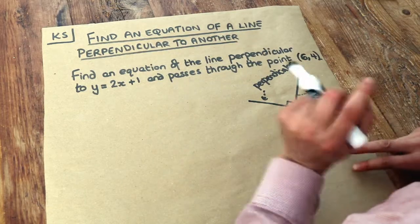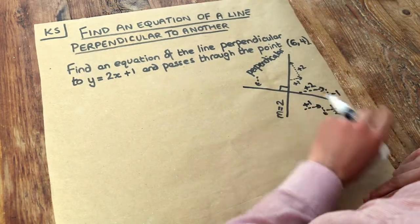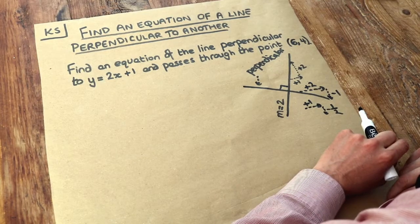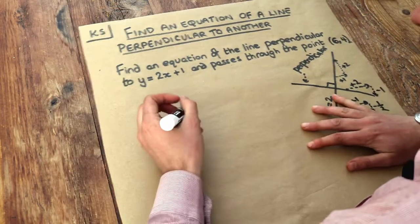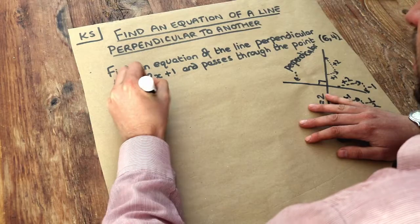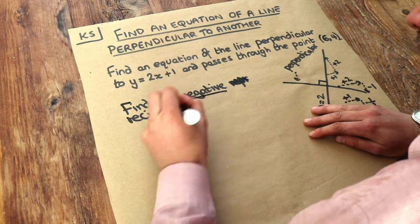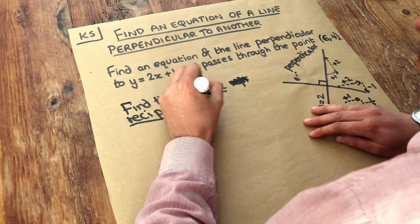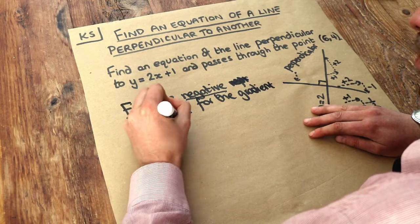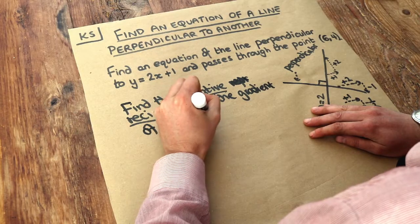Now if you don't understand that, don't worry, there's a very simple way to work out the gradient of a perpendicular line. And it's basically this: find the negative reciprocal, and I'll explain what I mean by that in a second, for the gradient of a line perpendicular to another.